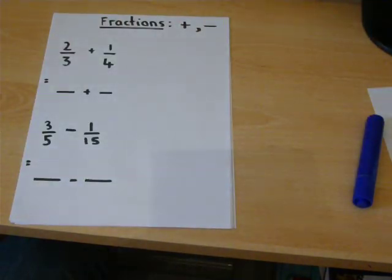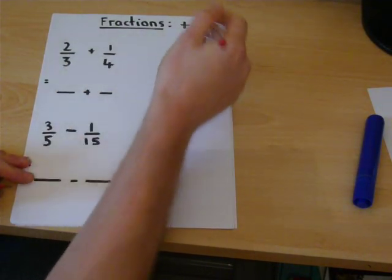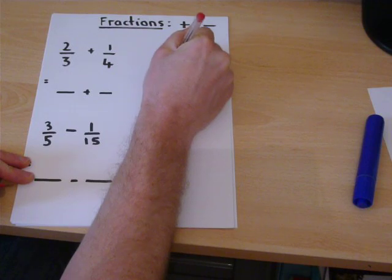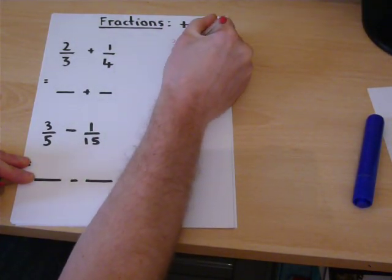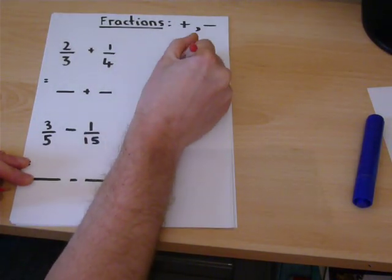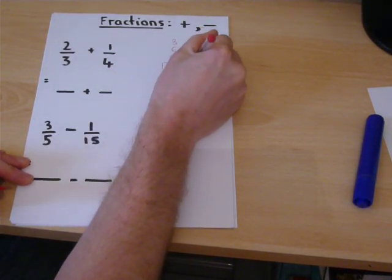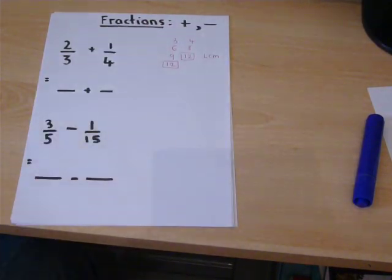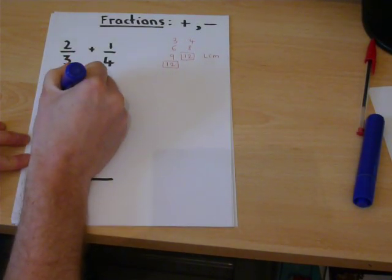One method you can try, if you write down the 3 times table and the 4 times table, you find what is called the lowest common multiple, LCM. Which means that we can convert the bottom of both fractions into twelfths.